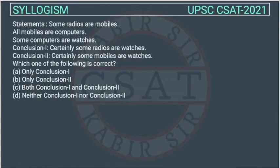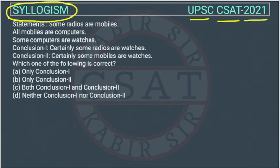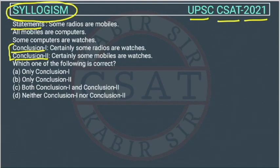This is a question of reasoning from chapter syllogism asked by UPSC in CSAT paper of 2021. These statements are given and two conclusions are given. We have to check which conclusion we can draw from these statements. We will solve this through Venn diagram.